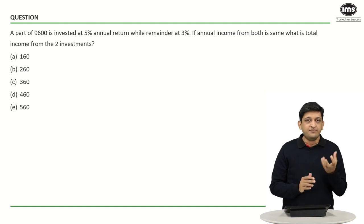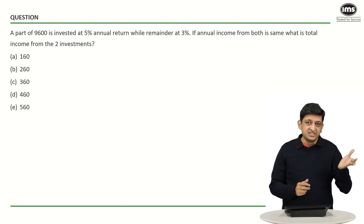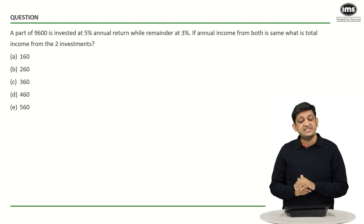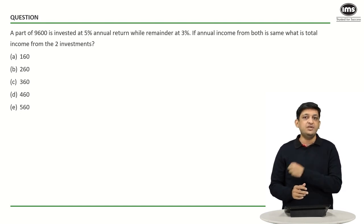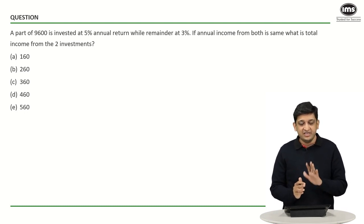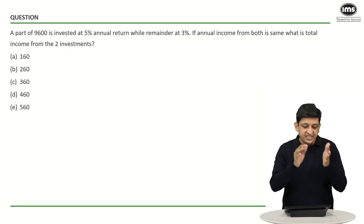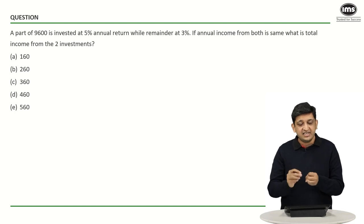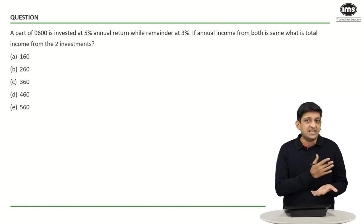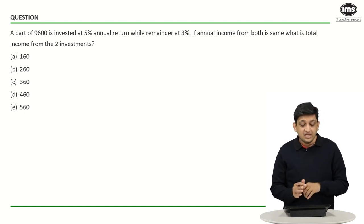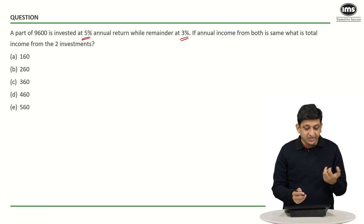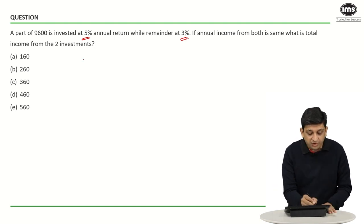In the second question, an amount of 9,600 rupees is invested — part at 5 percent return and the remaining part at 3 percent return. The annual income from both parts is the same, and we have to find the total income from the two investments. Since the incomes are equal, the ratio of the two parts invested must be 3 to 5 — because 5 percent multiplied by 3 parts equals 3 percent multiplied by 5 parts.